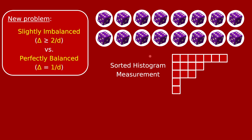Here we have 16 dice. You put them into a sorted histogram measurer — roll the dice and find how many times the most frequent face occurred, how many times the second most frequent face occurred, the third most frequent, and so forth. Then you stare at that and try to guess whether you're in the perfectly balanced case or the slightly imbalanced case.